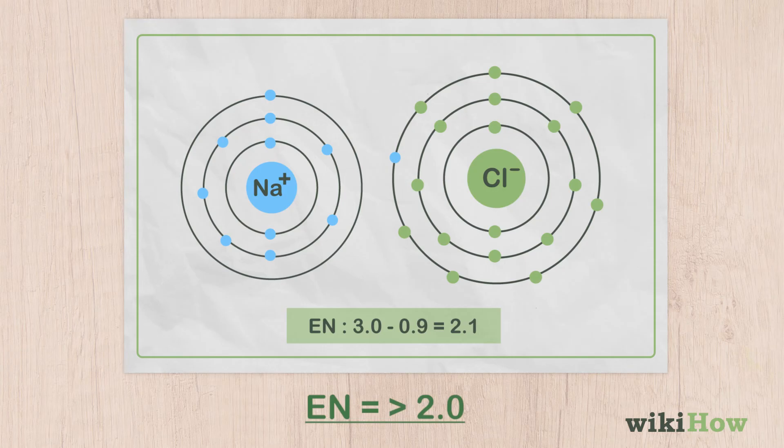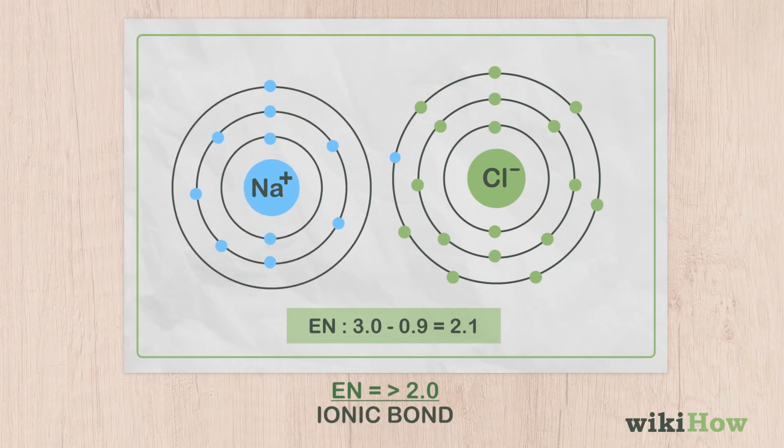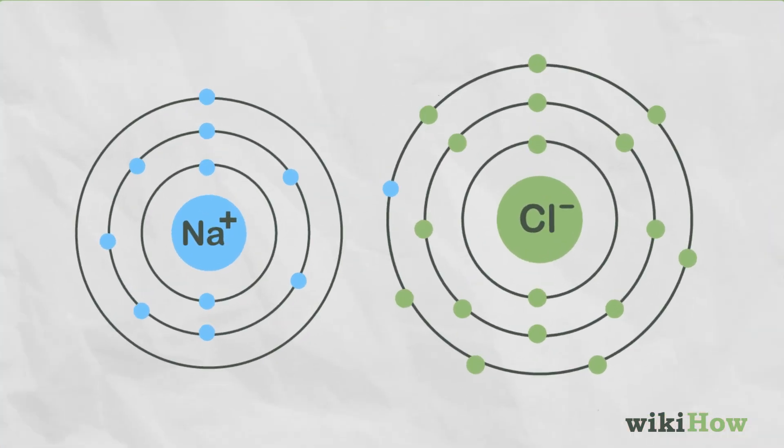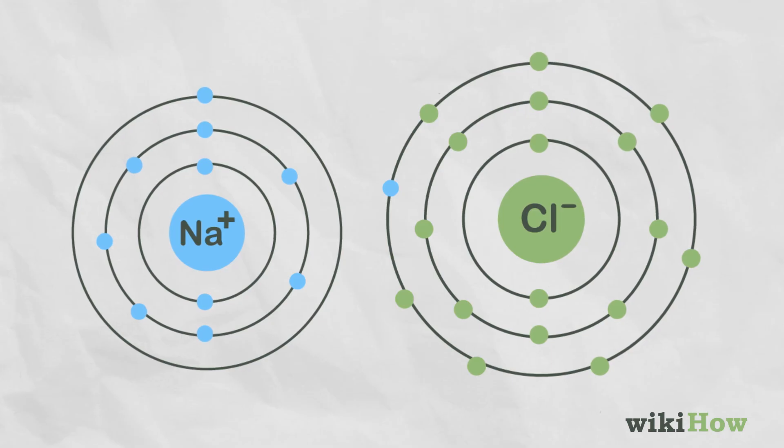If the difference is greater than 2.0, the bond is ionic, which means that one atom has a positive charge and the other has a negative one. These types of bonds are easy to break, meaning the molecule is very reactive.